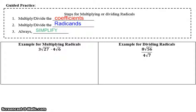So the first thing that we're going to do is look at this problem over here. When we multiply the coefficients, we're looking at the 3 and the 4. So we're going to do 3 times 4. So then we're going to keep our radical sign and multiply the radicands. The radicands are just the numbers underneath the radical sign. So 27 times 6.